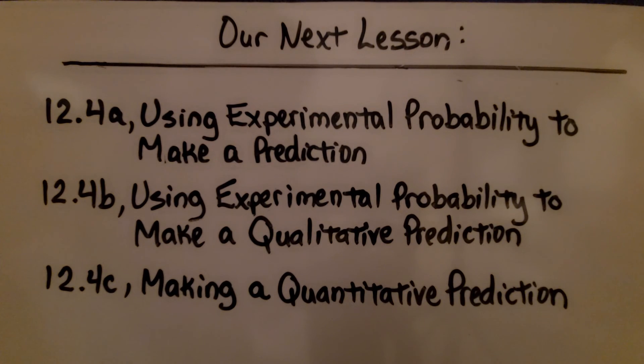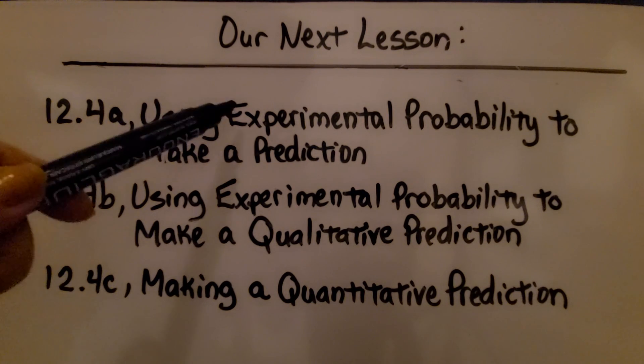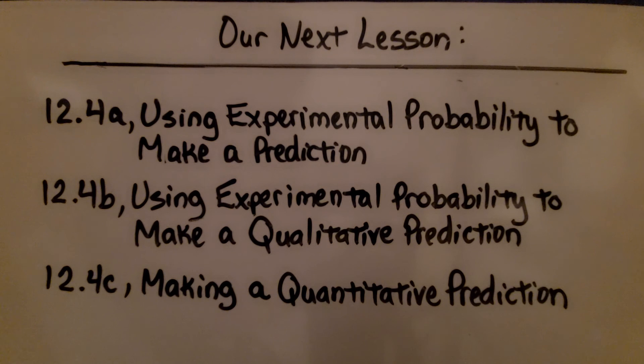We're finished with lesson 12.3. We're going to be moving on to 12.4, but we're still going to be talking about experimental probability. The next lesson is using experimental probability to make a prediction.